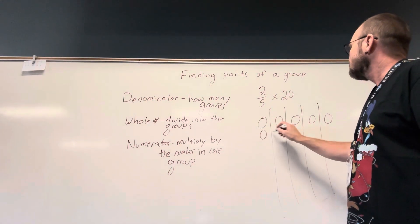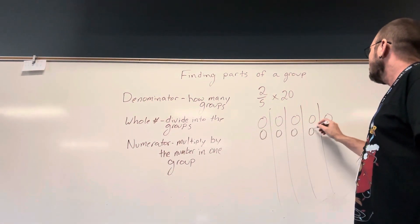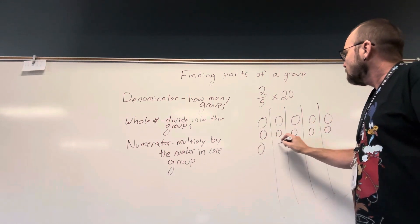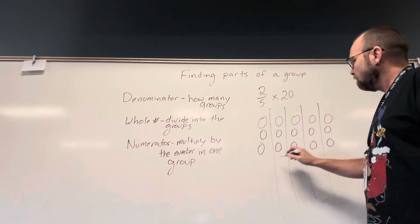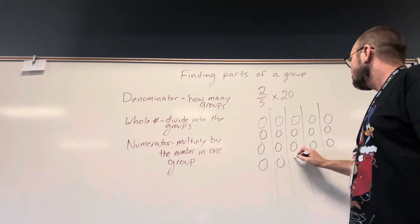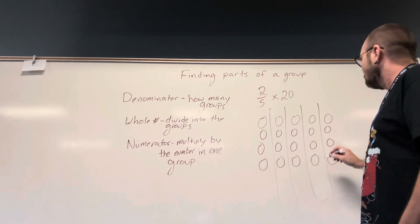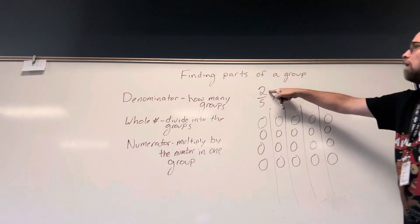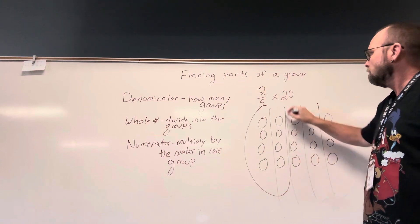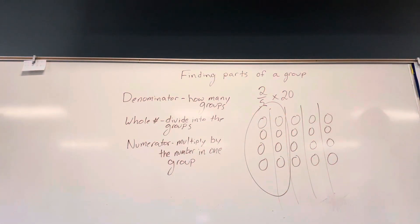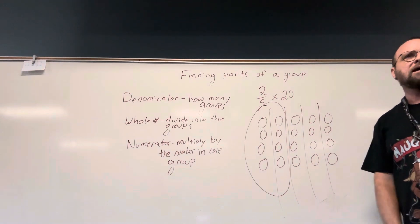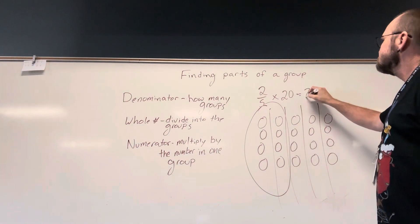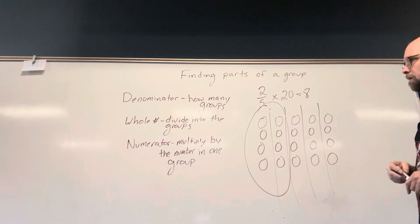Five, six, seven, eight, nine, ten, eleven, twelve, thirteen, fourteen, fifteen, sixteen, seventeen, eighteen, nineteen, twenty. So I've divided those twenty amongst the groups. Now I just want to know how many are in two of those groups, and how many is that? Eight.